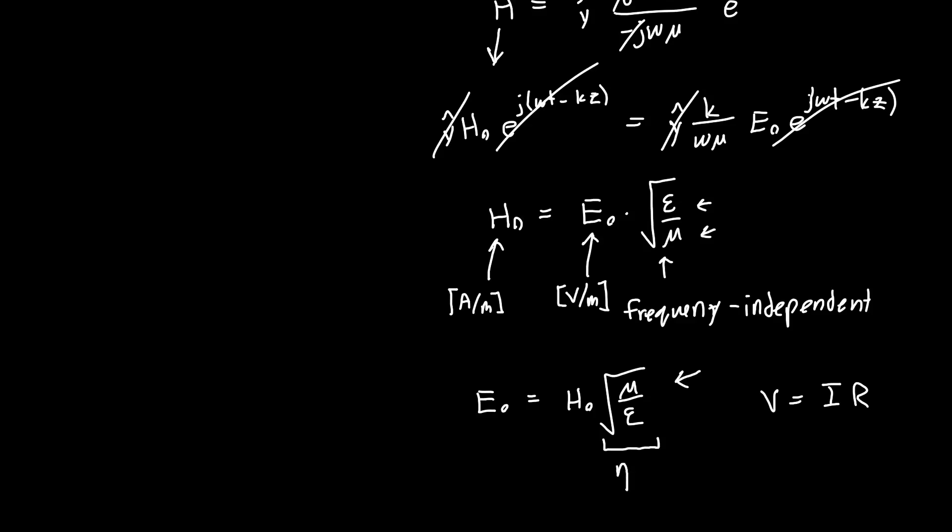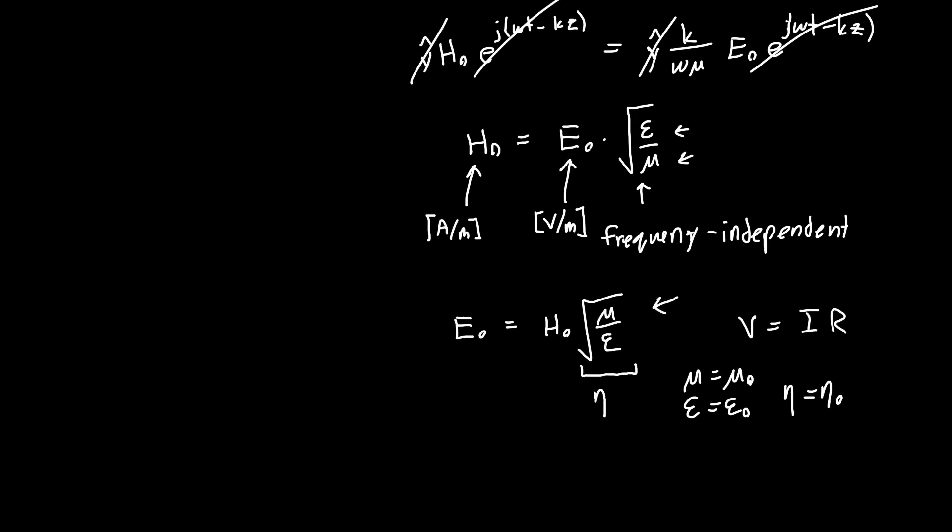The η is just the symbol for wave impedance. And in free space, so if μ is equal to μ₀ and ε is equal to ε₀, then we have η equals, well, η₀ let's say, and this is equal to a value of about 377 ohms, or exactly if you like, 120π ohms.